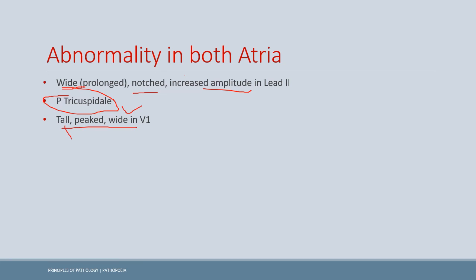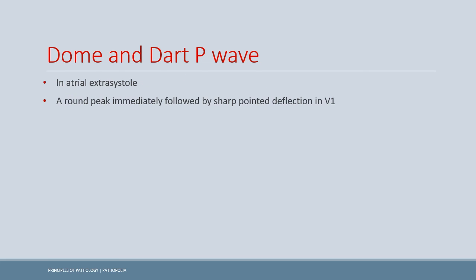The P wave can be tall and peaked due to right atrial abnormality and wide due to left atrial abnormality. A dome-and-dart P wave is seen in atrial extrasystole: when the atria fires abnormally, there is a notched appearance but the peak is relatively sharper, creating a dome and a dart pattern. This is usually seen in the V1 chest lead. This concludes our lecture on normal and abnormal P waves.